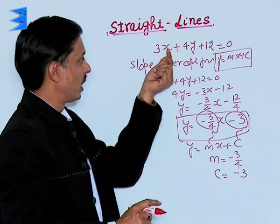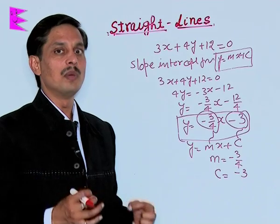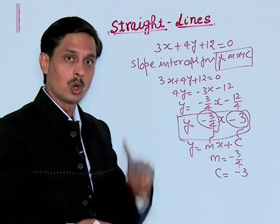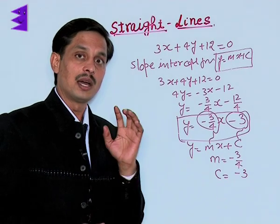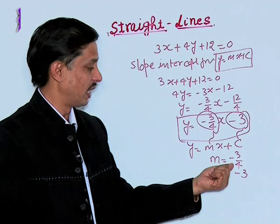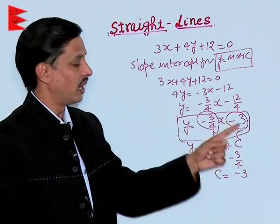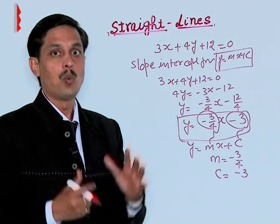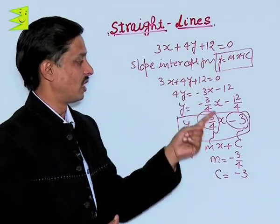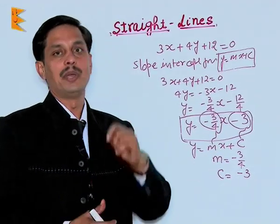We can say that standard form of the line ax plus by plus c equals 0 can be converted to slope-intercept form. After comparison, we can find the slope of the line, tan theta, and what intercept the line makes with the y-axis. Both can be obtained after converting the line to slope-intercept form and then comparing.